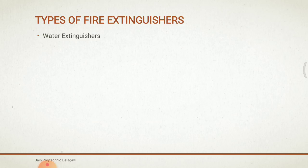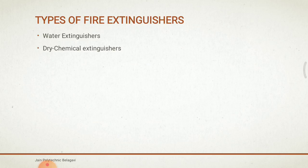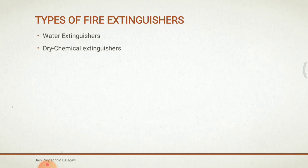Water mist extinguishers are suitable for Class A and C fires. Water extinguishers are effective on pool chemicals provided they are correctly stored away from electrical hazards in the equipment. Dry chemical extinguishers are useful for Class A, B, and C fires. They are used for common fire situations and have an advantage over CO2 and clean agent extinguishers in that they leave a blanket of non-flammable material on the extinguished material, which reduces the likelihood of re-ignition.